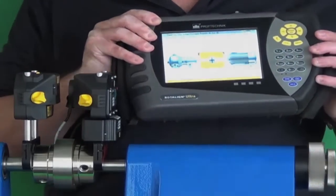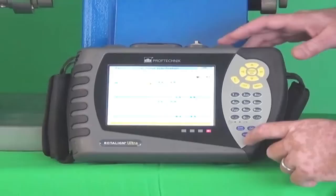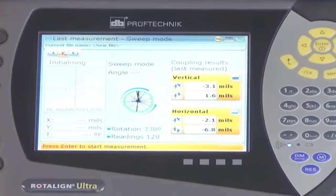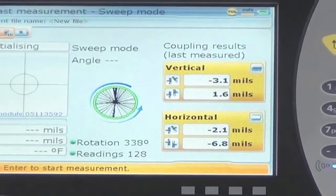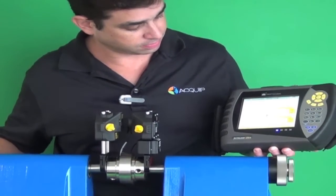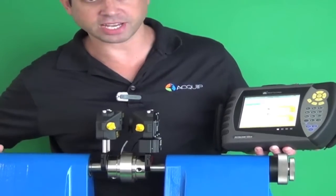Once we do that, we're ready to take readings. So we just press the measurement button, we wait for the laser to initialize with the Bluetooth sensor, and then we rotate to take readings.